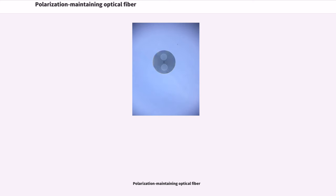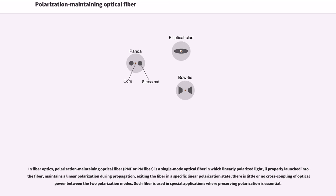Polarization maintaining optical fiber. In fiber optics, polarization maintaining optical fiber is a single mode optical fiber in which linearly polarized light, if properly launched into the fiber, maintains a linear polarization during propagation, exiting the fiber in a specific linear polarization state. There is little or no cross coupling of optical power between the two polarization modes. Such fiber is used in special applications where preserving polarization is essential.